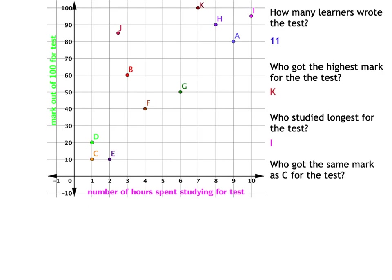Who got the same mark as C for the test? Have a look at C, it's that little orange dot in the bottom left-hand corner. C actually got a mark of 10 for the test. Where else do we see a mark of 10? Can you see it's anywhere along that orange line? That is where the mark out of 100 is 10. Learner E also got 10 out of 100 for the test.